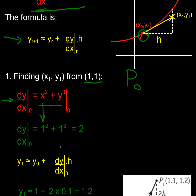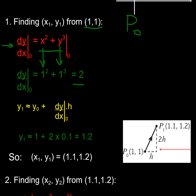All I need to do is put the values in: 1 squared for that, 1 cubed for that, add that together to get 2. So I know my gradient at this point is 2. Using my Euler formula, if I know that the gradient is 2 and I started at y equals 1, my gradient is 2 and I'm going a distance of 0.1 to the right, so my y value is 1.2. I've moved from my initial point P0 to P1, which I've worked out to be (1.1, 1.2).